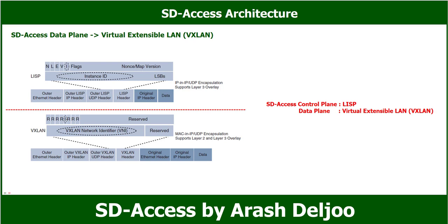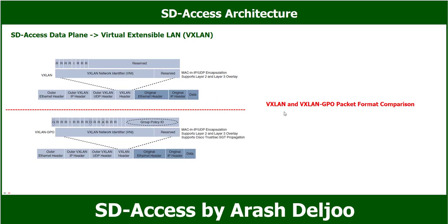The differences between LISP and VXLAN packet formats can be illustrated as follows: LISP encapsulates the original IP packet — data, original IP, LISP header, UDP header, IP header, Ethernet header. VXLAN encapsulates the frame — data, original IP, original Ethernet, VXLAN header, UDP, IP, and outer Ethernet header. Inside the VXLAN header we have the VXLAN Network Identifier (VNI), which is used for segmentation in the overlay.